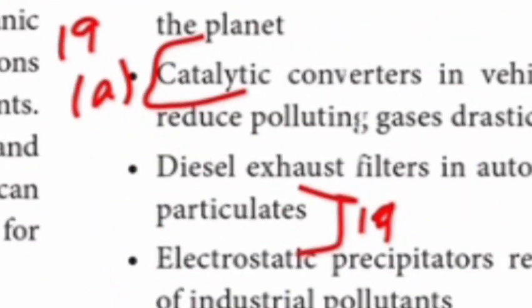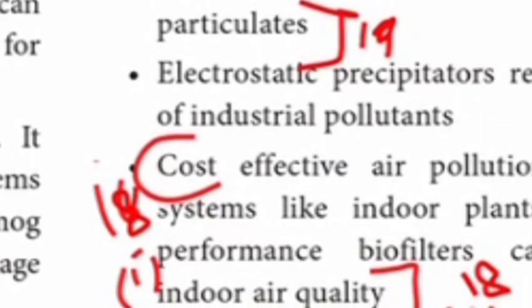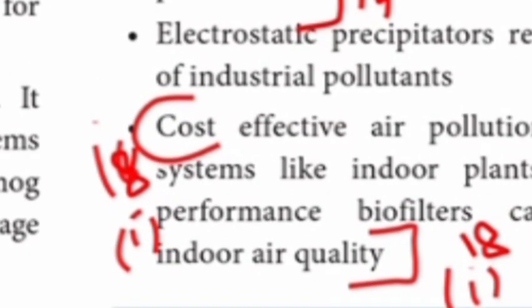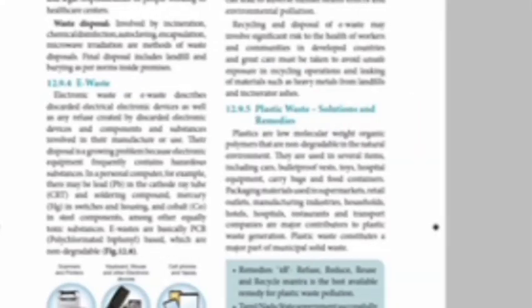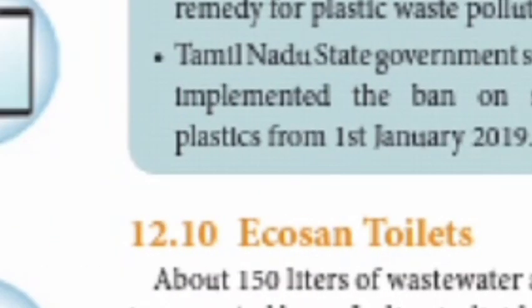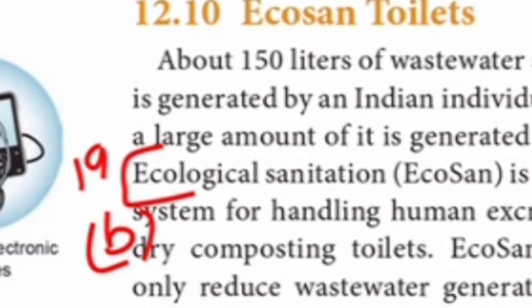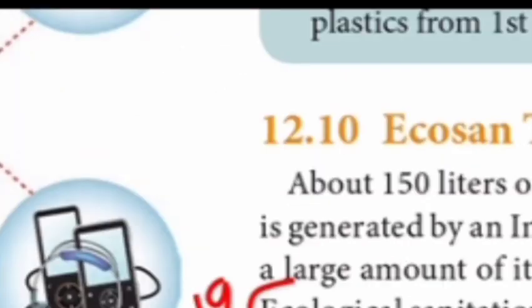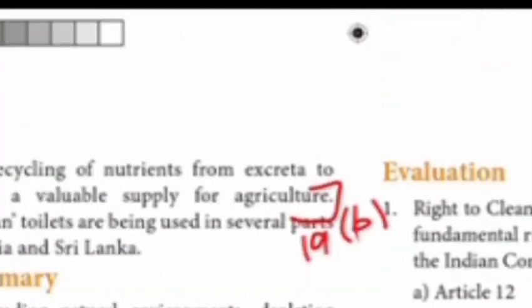Option A, Option B — 2 options. 19 is the answer. Page 204 — Catalytic Converters, that is the answer. Particulates — that is the answer. 19 is the answer. Page 215 — Echoes and Toilets. Ecological. Next page — Agriculture. Agriculture — 19 is the answer.